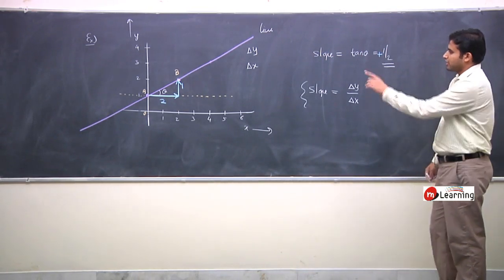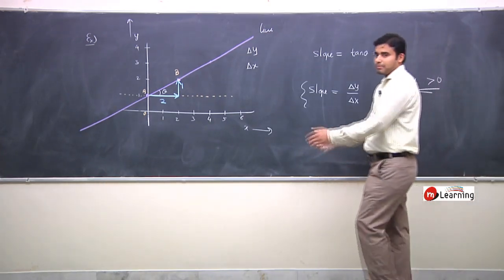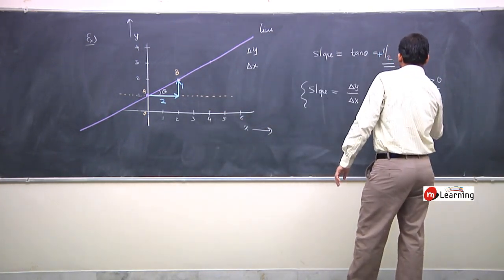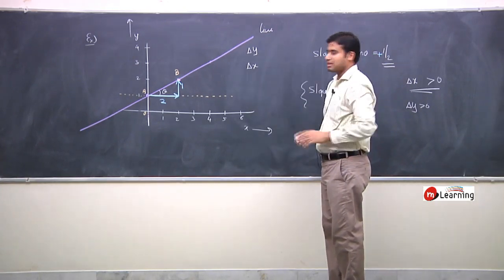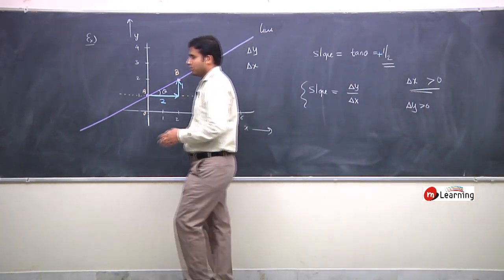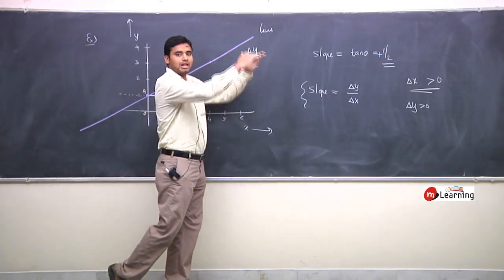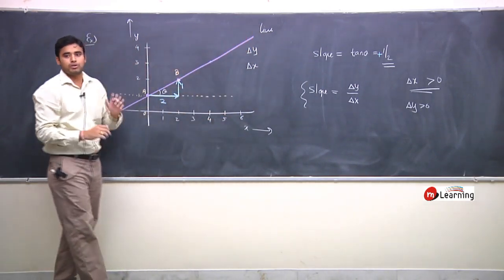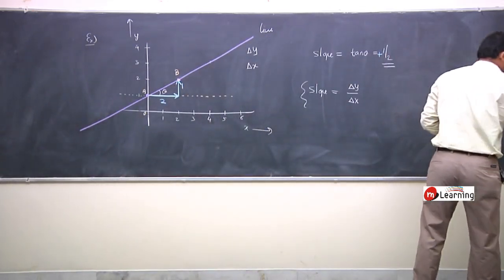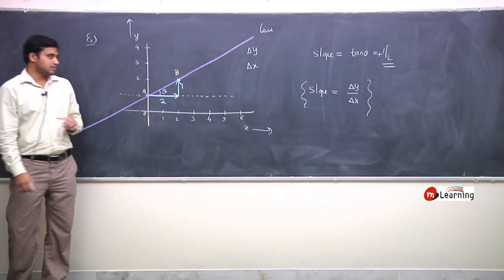In this problem, delta x is positive because you are moving in the positive x direction. If you are moving in the positive x direction and y also increases, the slope is positive. So slope equals delta y by delta x — delta y means change in y, and delta x means change in x.